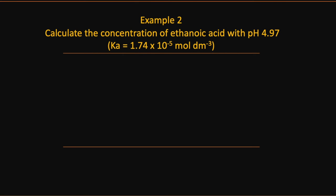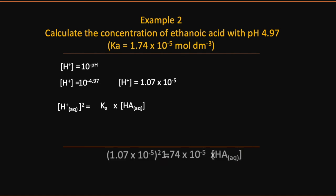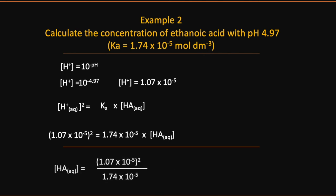Example number two, we're going to find the concentration now of some ethanoic acid. So we've been given the pH this time, so we can find the hydrogen ion concentration. And once we've got that hydrogen ion concentration, we can substitute that into our Ka expression. We know the hydrogen ion concentration and we also know Ka. And therefore, we can work out the concentration of the acid, HA.